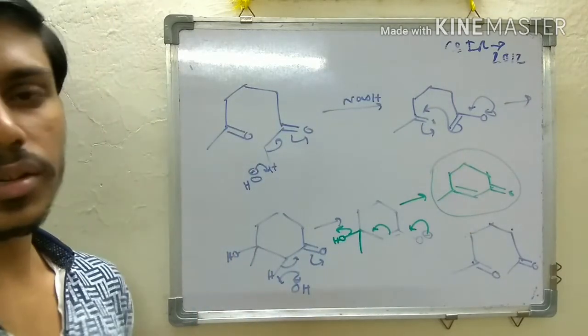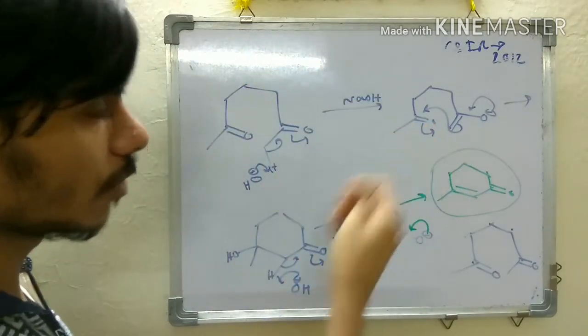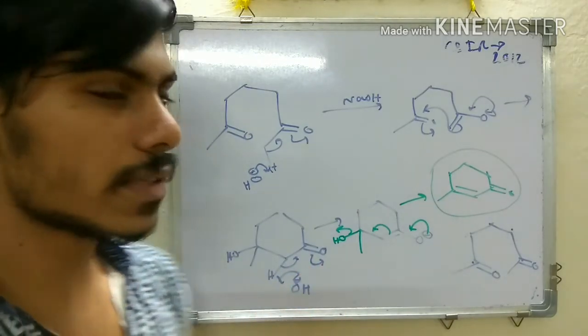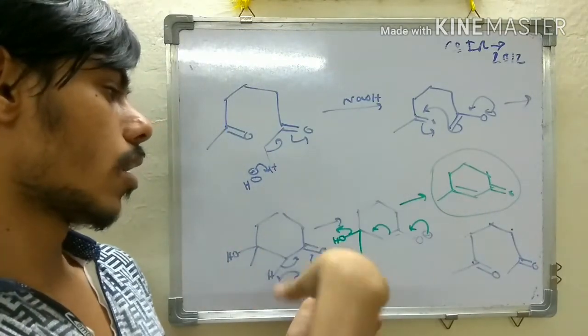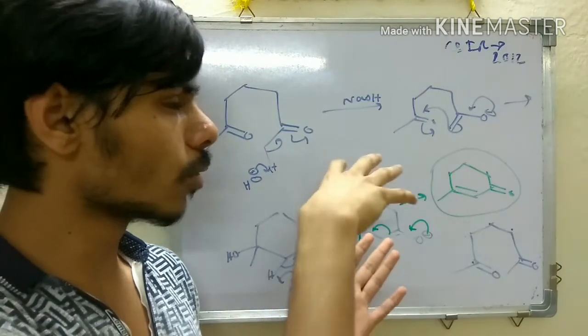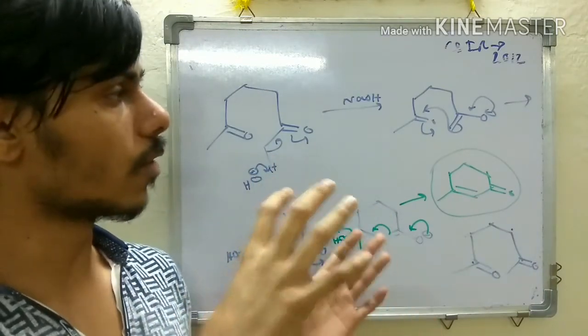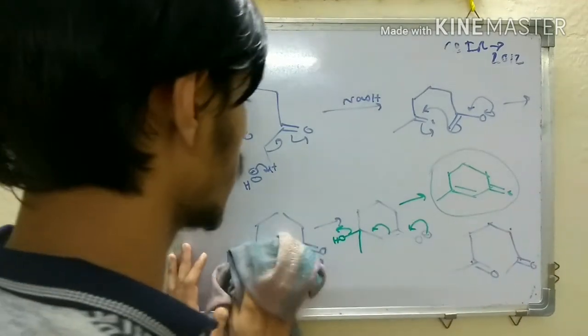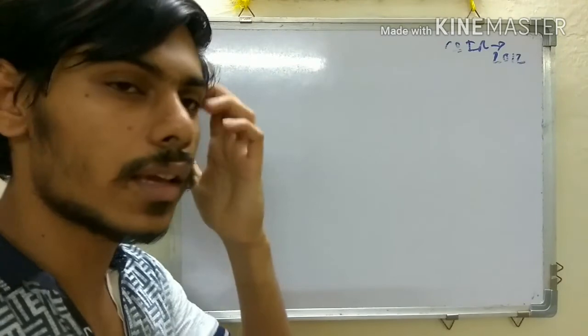This problem is important because it contains several reactions: first Birch reduction, then hydrolysis, then Robinson annulation. These types of problems you should do more because they revisit concepts you learned previously and teach you how to approach problems. If your concepts are clear, you can do it in your exam, but you need practice. That's all. Thank you for watching. If you like the video, share it, like it, and subscribe to the channel.